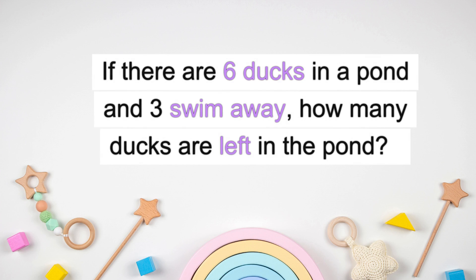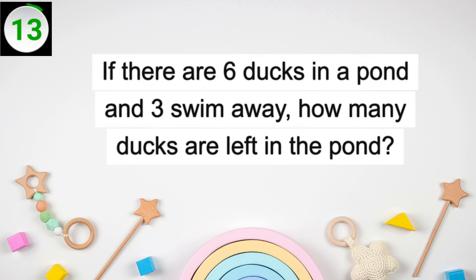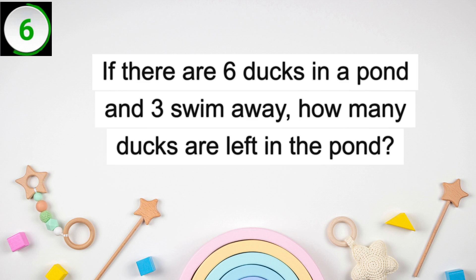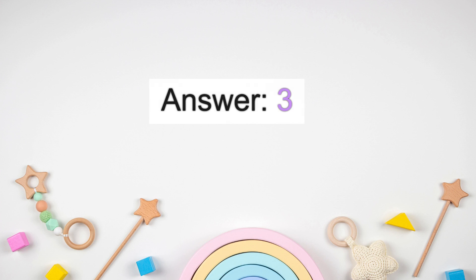If there are 6 ducks in a pond and 3 swim away, how many ducks are left in the pond? Answer: 3.